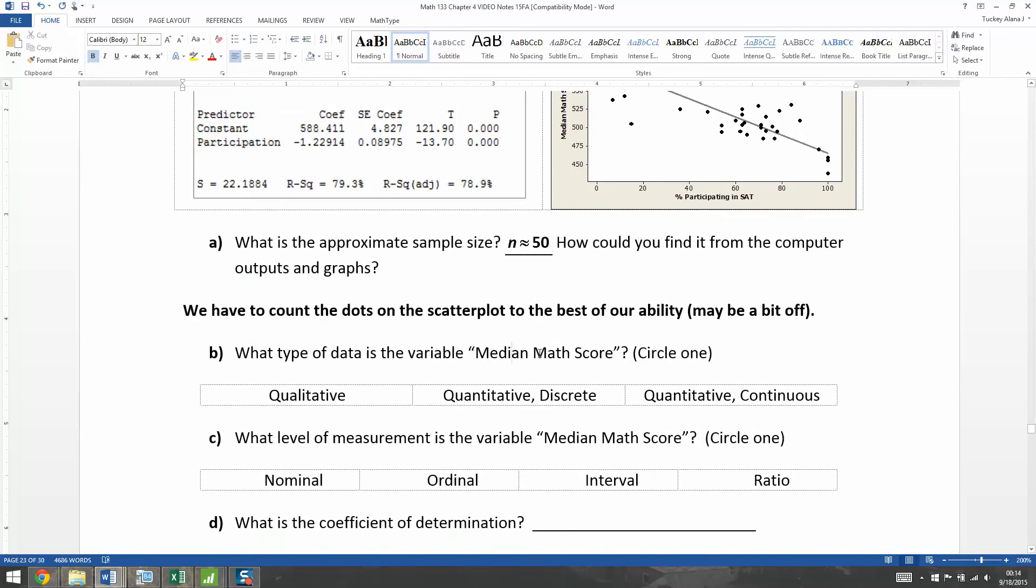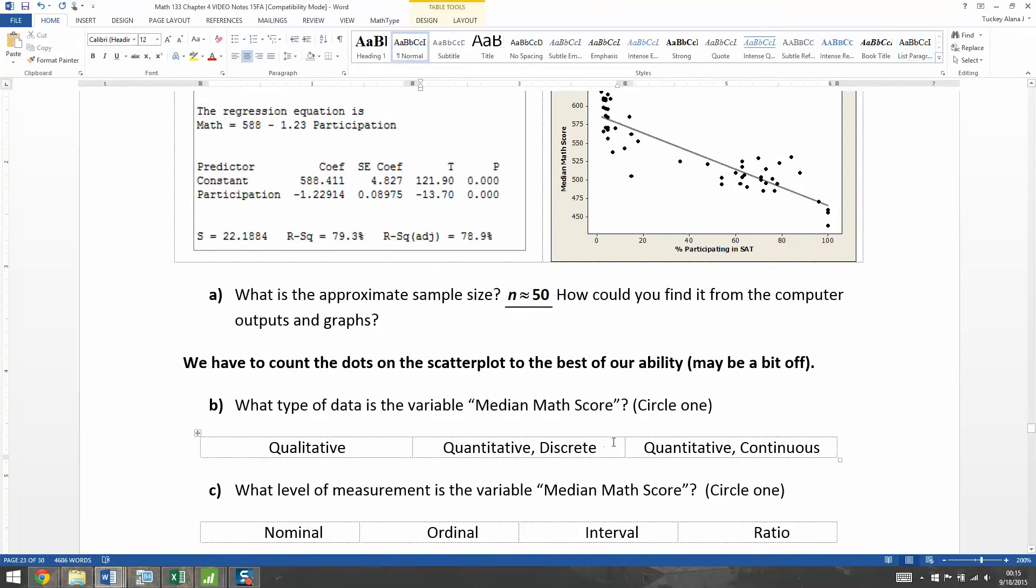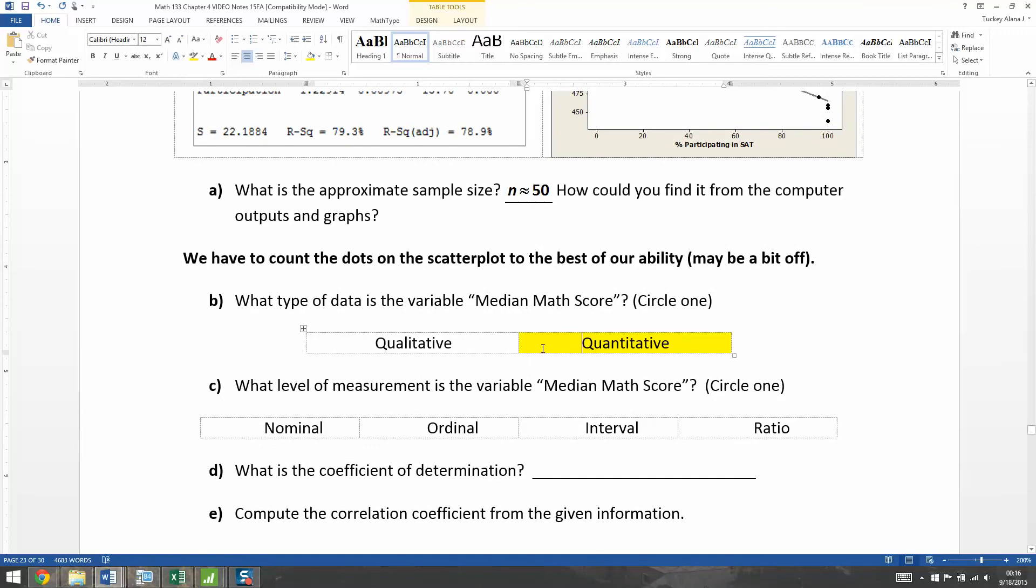If the computer output doesn't give it to us, which this particular computer output does not. All right, what type of variable is the median math score? Well, technically because it's a median, that means it actually is limited in the number of decimal places it can have. It can't go on forever and ever and ever like some other values might be able to. So that actually makes it quantitative discrete, because medians are limited to one or two more decimal places than the data itself actually has. So one would argue that it's quantitative discrete.